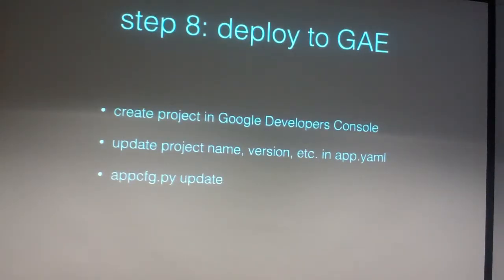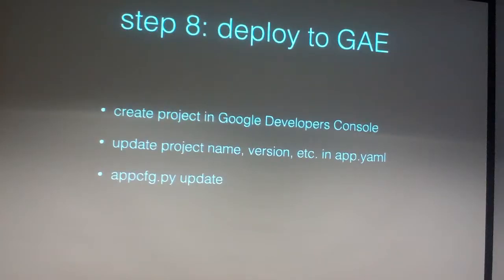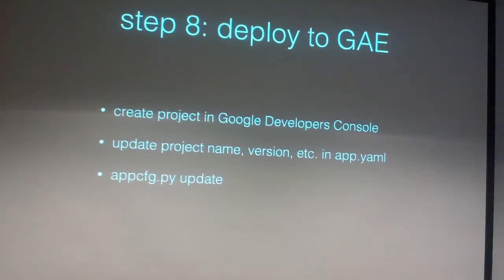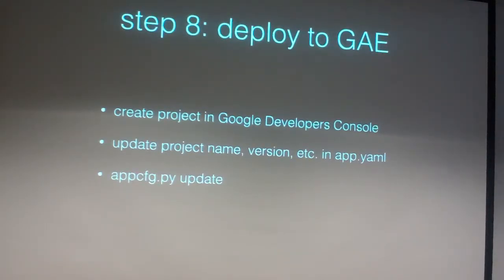Next, I created a project in the console, added that to my app.yaml file, and then deployed the project. If any of you have never deployed on GAE, I recommend at least trying it. Once you get your toolchain set up, it's really quite easy — there's one command to deploy. You can also authenticate against GitHub, and whenever you push to master, that gets checked out automatically.